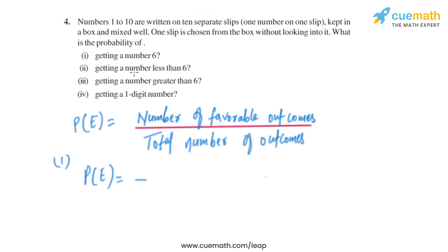As we know, there is only one number that is 6, so the number of favorable outcomes is 1 divided by the total number of outcomes. The total number of numbers are 10, so it will be 1 by 10.